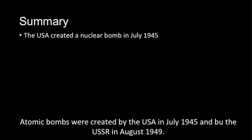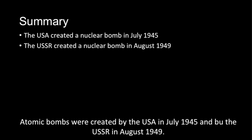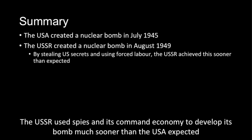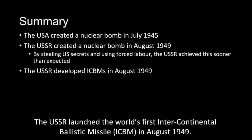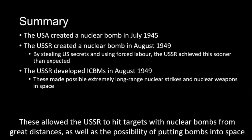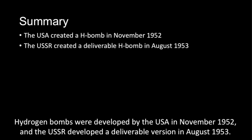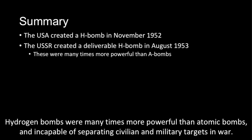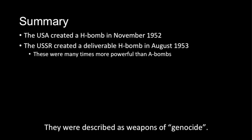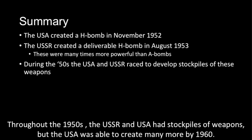So, to summarise what we've learned today. Atomic bombs were created by the USA in July 1945 and by the USSR in August 1949. The USSR used spies and its command economy to develop its bomb much sooner than the USA expected. The USSR launched the world's first intercontinental ballistic missile, ICBM, in August 1957. These allowed the USSR to hit targets with nuclear bombs from great distances, as well as the possibility of putting bombs into space. Hydrogen bombs were developed by the USA in November 1952 and the USSR developed the deliverable version in August 1953. Hydrogen bombs were many times more powerful than atomic bombs and incapable of separating civilian and military targets in war. Throughout the 1950s, the USSR and USA had stockpiles of weapons, but the USA was able to create many more by 1960.